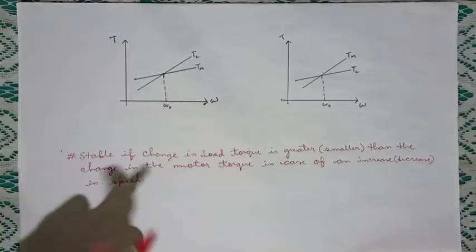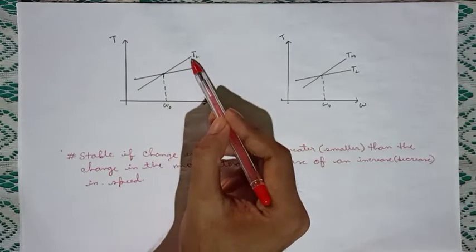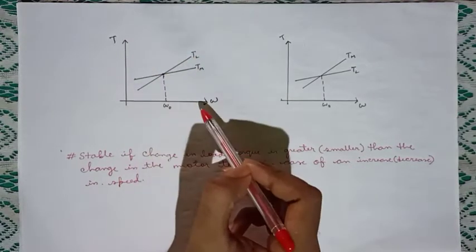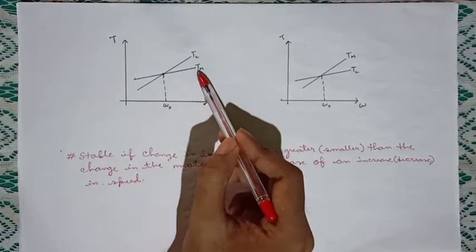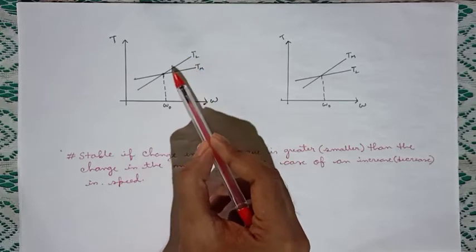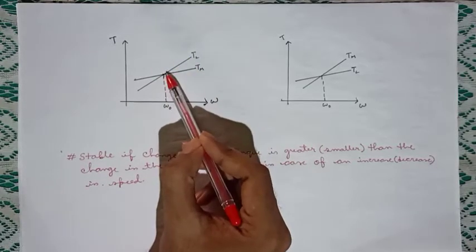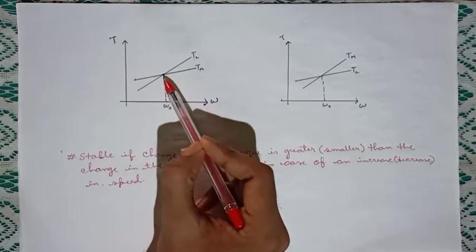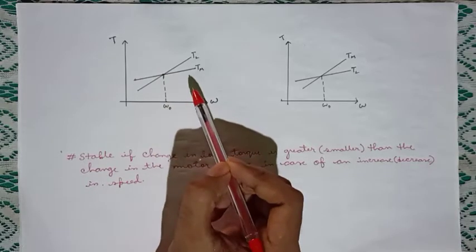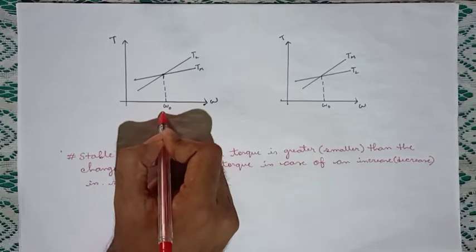Let us see all three cases using the speed-torque curve. We have tl as the load torque curve, which represents the variation of torque with respect to speed. Similarly, we have the motor torque curve. The intersection of both curves represents the equilibrium point, where the magnitude of load torque and machine torque are equal and the drive will not undergo any acceleration. Let the equilibrium speed be omega_0.